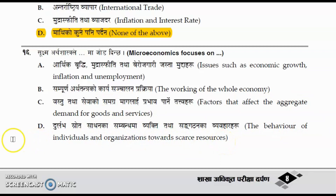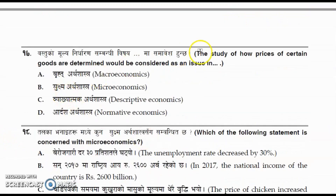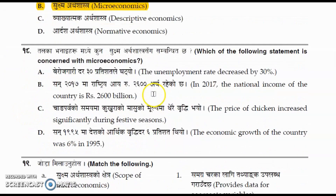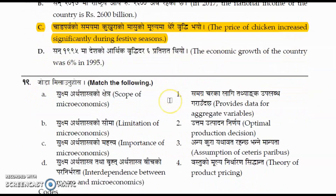Question number seventeen: the study of how prices of certain goods are determined would be considered an issue in which field? The options are microeconomics, macroeconomics, descriptive economics, and normative economics. The correct answer is option B, microeconomics. Question number eighteen: which statement is concerned with microeconomics? The price of chicken increased significantly during the festive season — the correct answer is option C.